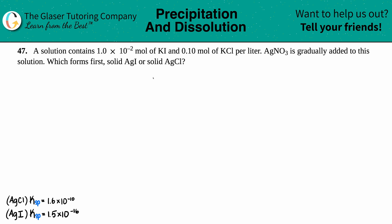Number 47: a solution contains 1.0×10⁻² moles of potassium iodide (KI) and 0.1 moles of potassium chloride (KCl) per liter. AgNO₃ is gradually added to the solution. Which forms first — solid AgI or solid AgCl? We're talking about precipitation: which one is going to form a solid precipitate first?